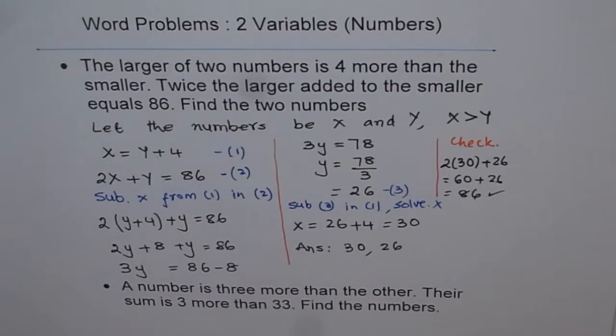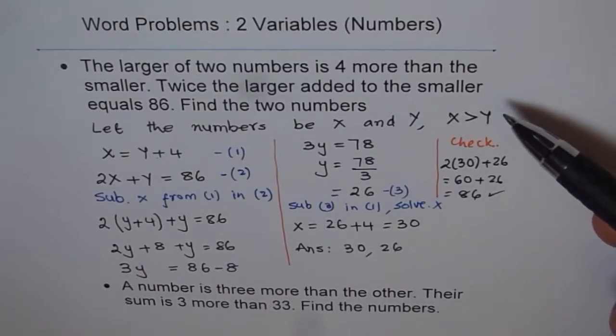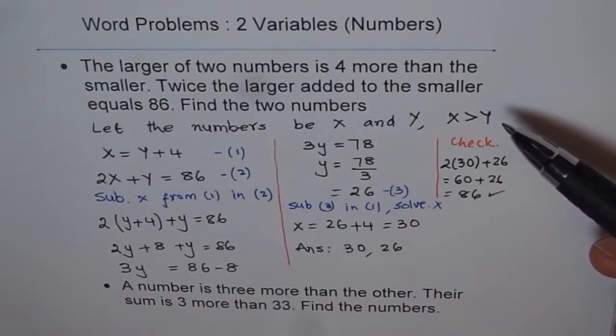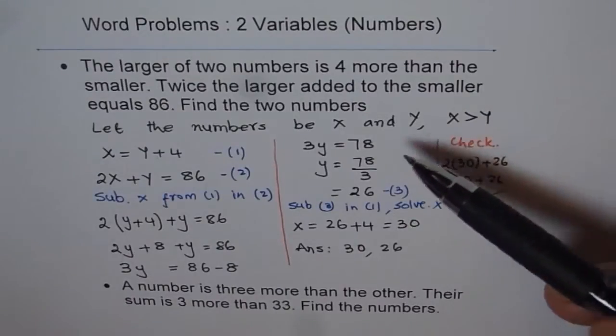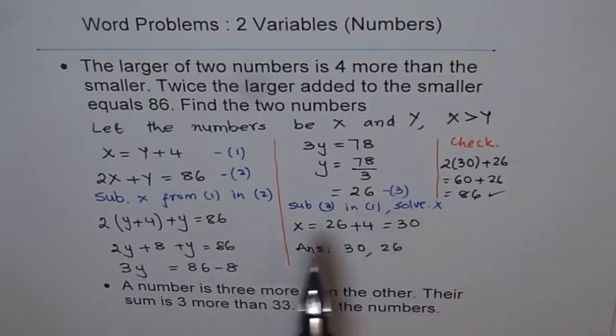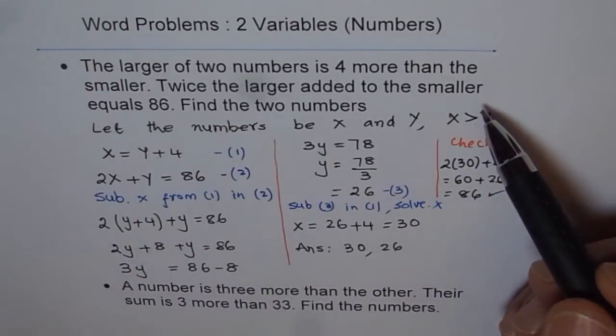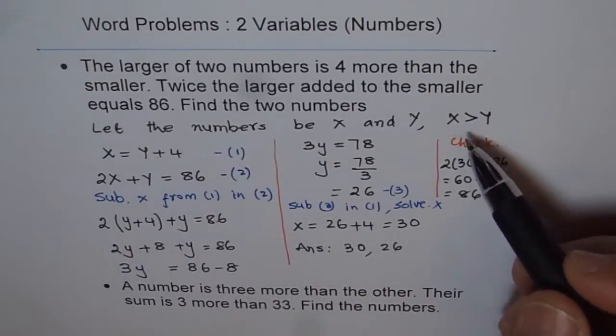So these are the steps followed to solve a word problem. So let's review. Read the problem twice. When you read it for the second time, identify the variables, define them. And then, write down equation based on the statements in the problem.